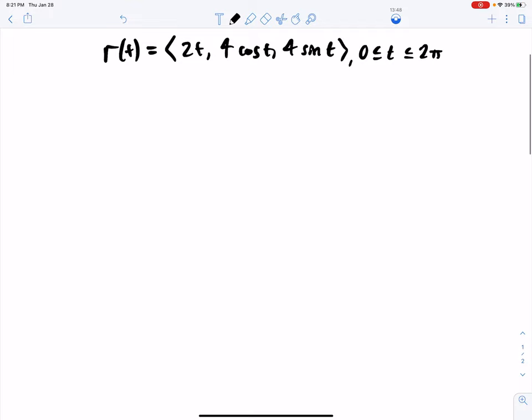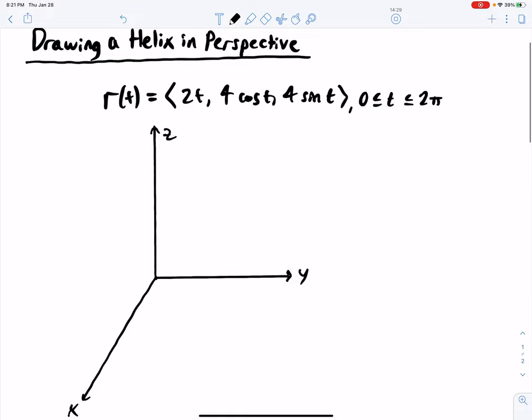The first thing we want to do is sketch our axes. Let's get a ruler here. So here's the x-axis, here's the y-axis, and then we'll draw the z-axis. So there are our axes, and we want to draw the helix within the perspective of these axes here.